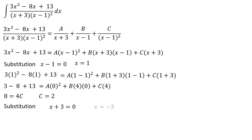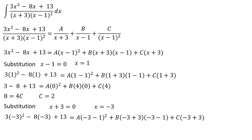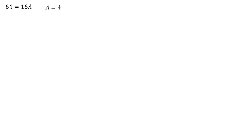Next, substitution: x + 3 = 0, or x = -3. We get 3(-3)² - 8(-3) + 13 equals A(-3-1)² plus B(-3+3)(-3-1) plus C(-3+3). This gives 27 + 24 + 13 equals A·16 plus 0 plus 0, so 64 = 16A, therefore A = 4.